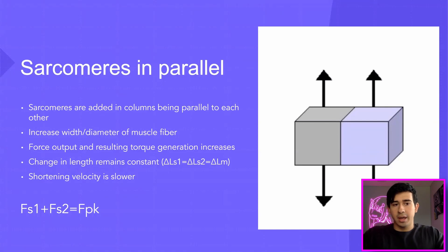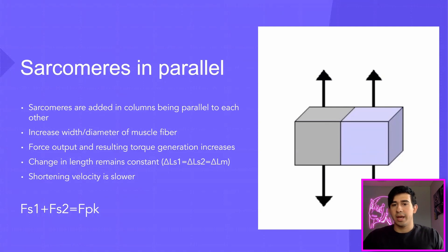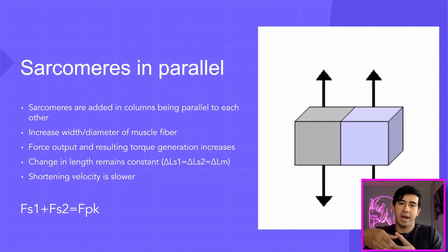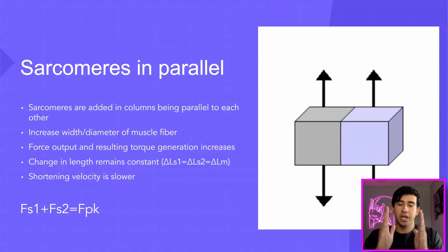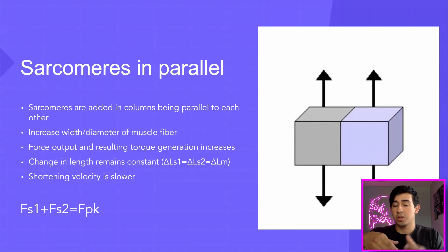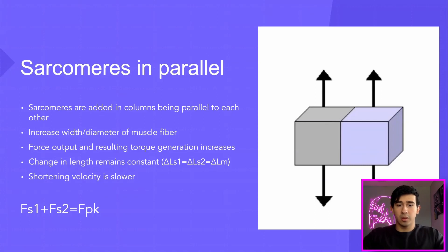Adding sarcomeres in parallel can actually increase force output and resulting torque generation, because muscle torque is dependent on muscle geometry. Muscles have a cross-sectional area which is packed with sarcomeres. When we add more sarcomeres in that cross-sectional area, it allows a greater capacity for force generation. So with sarcomeres in parallel, we're not changing the distance of the muscle fiber but increasing its diameter, which allows us to pack more sarcomeres into the cross-sectional area.